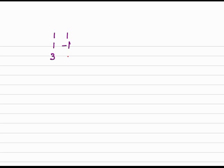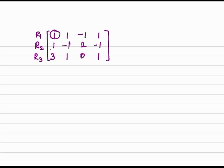By using this leading one, we make the entries below it zero. The given matrix is: R1 = [1, 1, 3, 1], R2 = [minus 1, 1, minus 1, 2], R3 = [0, 1, minus 1, 1]. By using this leading one we have to make the following entries zero.